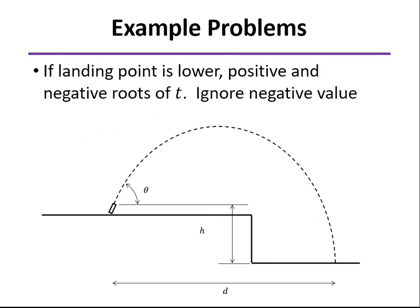If you flip that around so that now you're launching from a higher point, then you're going to get a positive and a negative root for your quadratic equation. So of course, the negative root is meaningless here. Mathematically, it just means if you extend that parabola back before the launch time, then that would be where the y value would be at the landing point. But obviously, it doesn't mean anything physically, so just ignore the negative root.